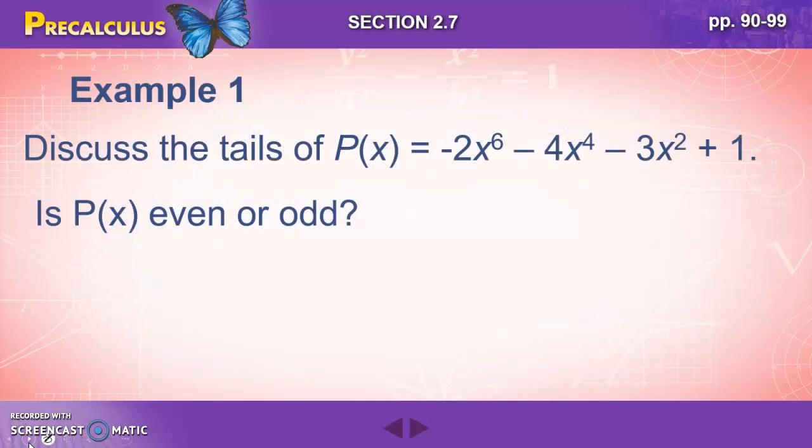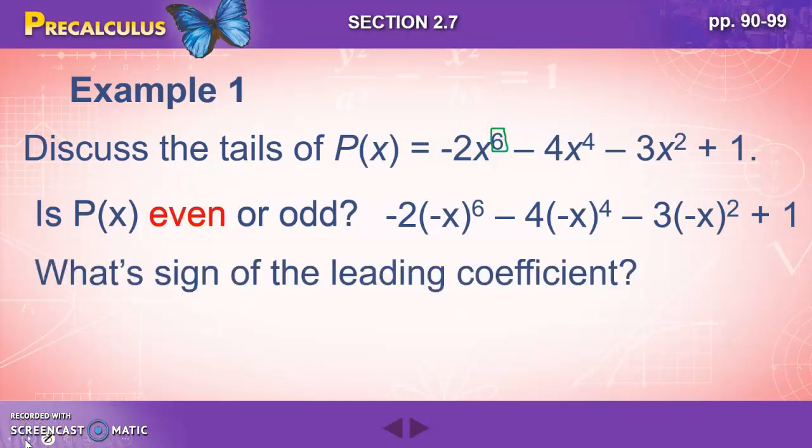So let's talk about the tails of this polynomial. We've got negative 2x to the sixth minus 4x to the fourth minus 3x squared plus one. So first of all, is it even or odd? Well, we've got 6th degree. That's even. And the leading coefficient, positive or negative?